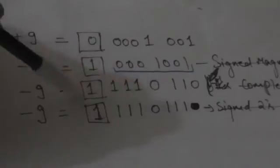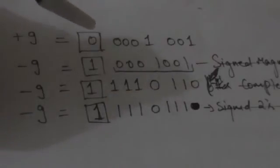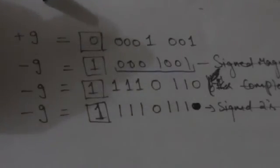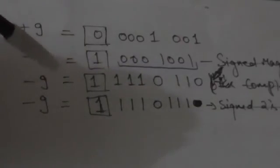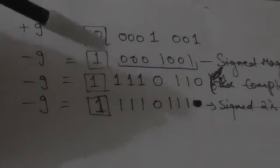Now suppose we have to represent -9 in the signed one's complement representation system. In this case we will write the one's complement of the signed binary number whose value is +9, including its sign bit. So we take the one's complement of this signed binary number including its sign bit.